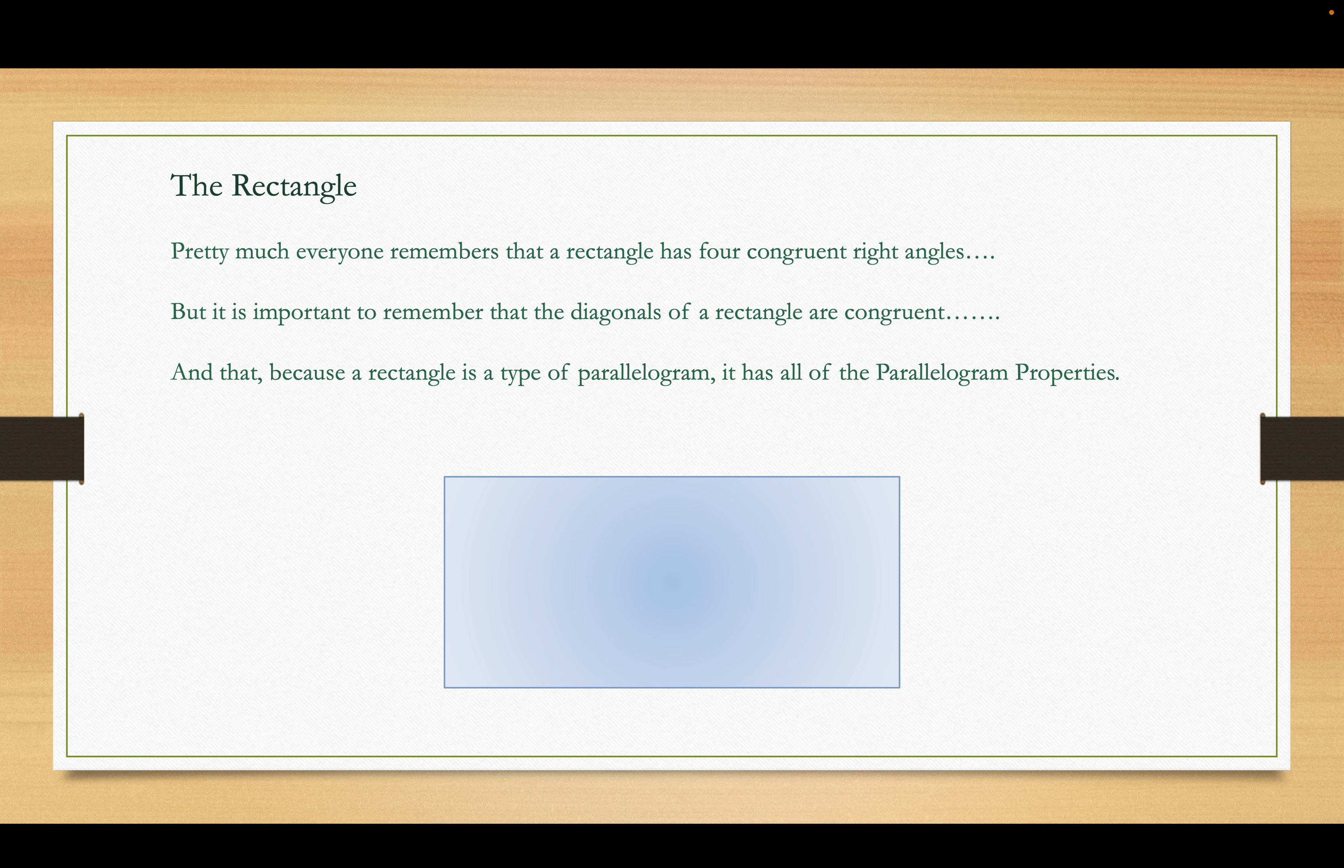Pretty much everybody alive remembers that a rectangle has four right angles. Four congruent right angles. That's a true statement. But it's important that the diagonals are also congruent to each other. That's not true in any old parallelogram. But it is true in a rectangle, which is a type of parallelogram. Because we are a little different from our parents. Like I said before, my dad, he pretty much couldn't catch a fish to save his life. I caught a lot of fish in my life.